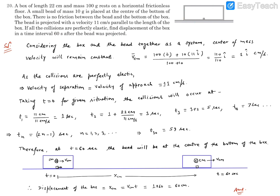In the picture, the floor is frictionless and this is the box. There is a bead at the center and we are giving the velocity 11 centimeters per second to the bead. Let's say we are giving the velocity in the positive x direction, that is i-hat, and we are considering rightward as the positive direction.